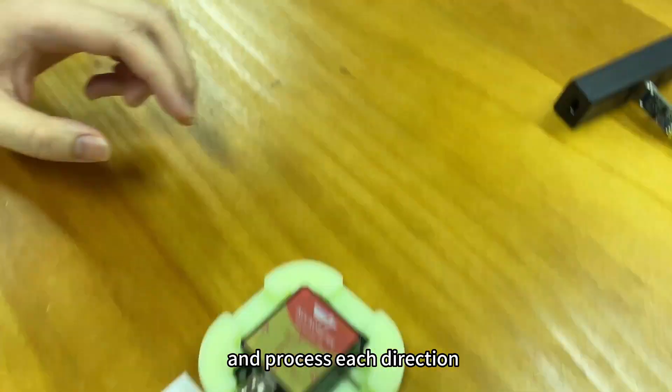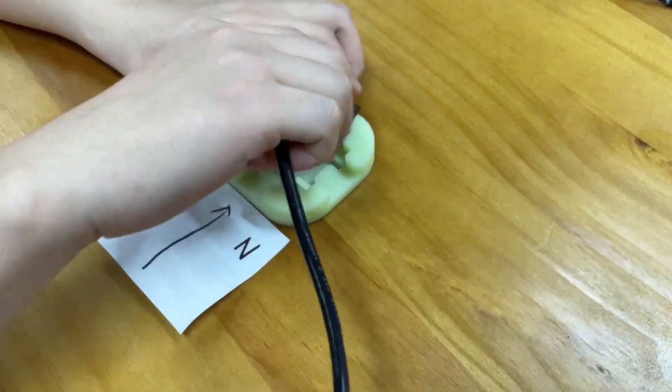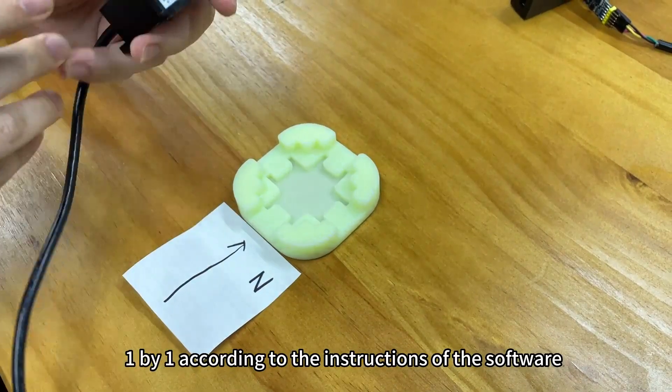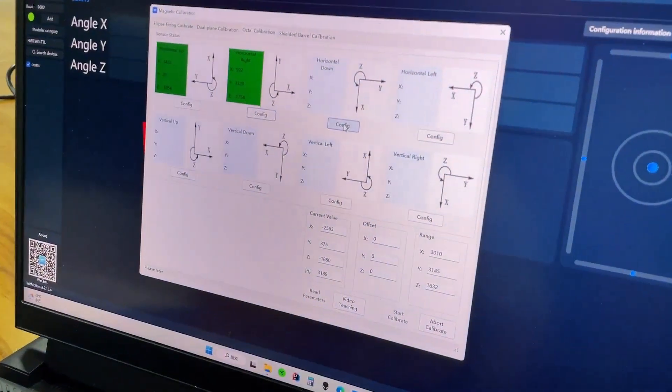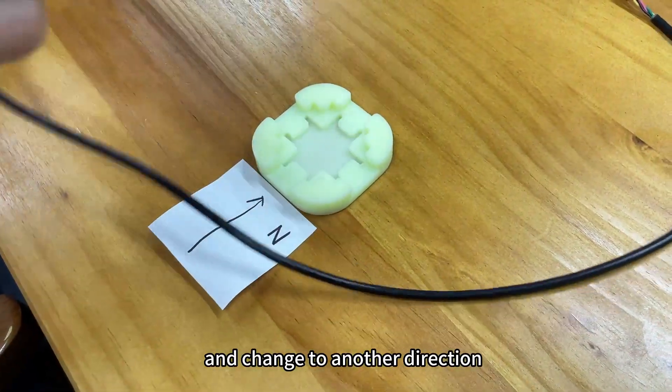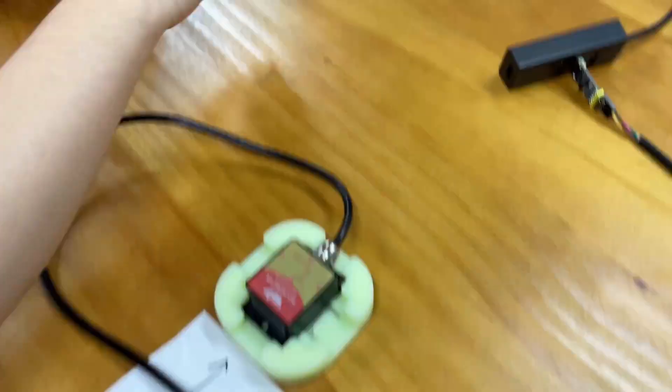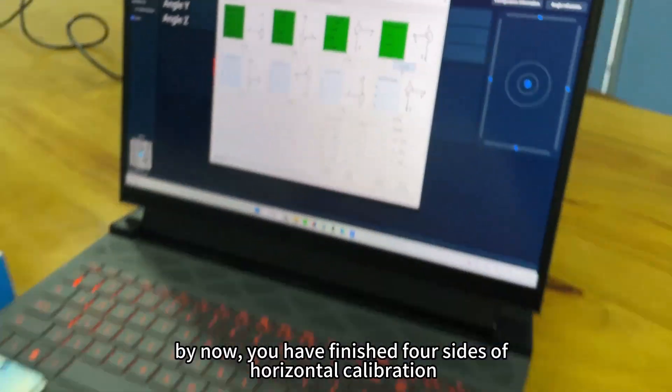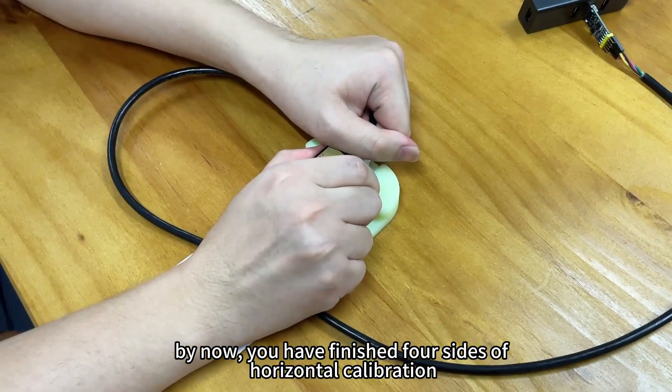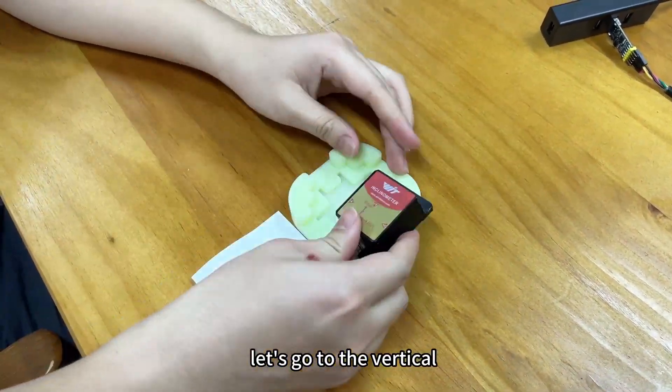Process each direction one by one according to the software instructions and change to another direction. By now, you have finished four sides of the horizontal calibration. Let's go to the vertical.